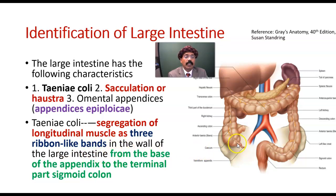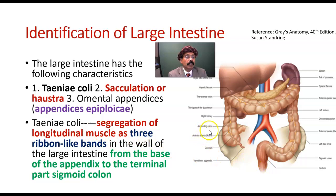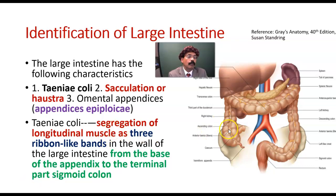From the base of the appendix — this is the appendix, also called the vermiform appendix — the taenia coli begin here and go up to the termination of the sigmoid colon. Taenia coli is not present in the appendix, and taenia coli is not present in the rectum and anal canal. We have three taenia coli, beginning from the base of the appendix and ending at the end of the sigmoid colon. These are thickening of the longitudinal muscle layer in the wall of the large intestine.